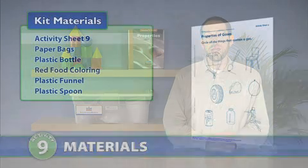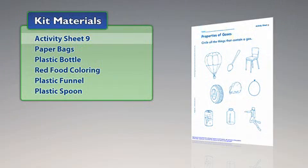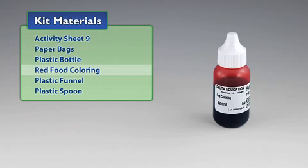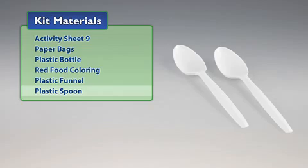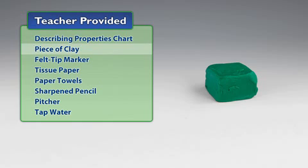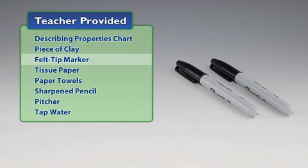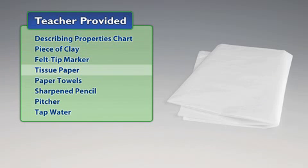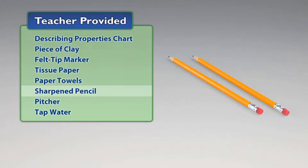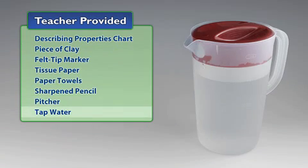You will need the following materials from the kit: Activity Sheet 9, paper bags, plastic bottle, bottle of red food coloring, plastic funnel, and plastic spoon. You will also need to provide a describing properties chart, a piece of clay, felt tip marker, one sheet of tissue paper, paper towels, a sharpened pencil, a pitcher, and tap water.